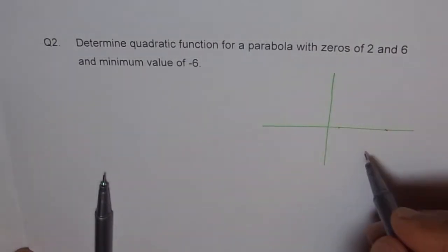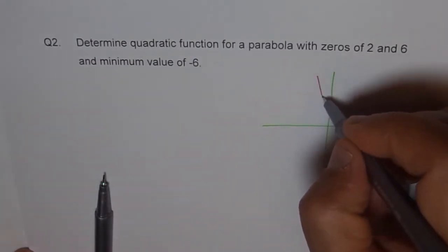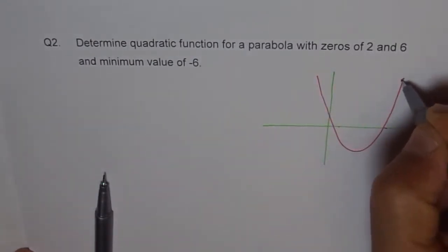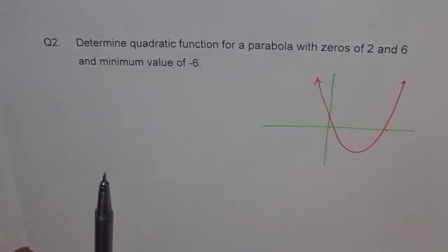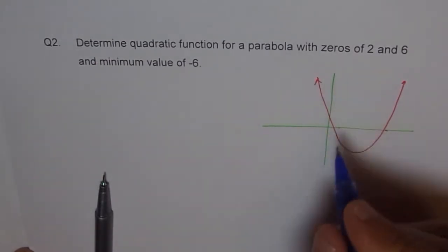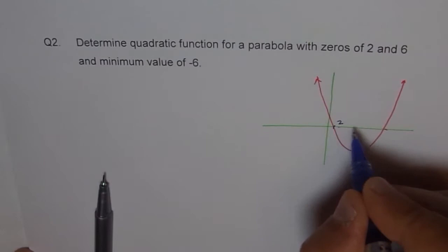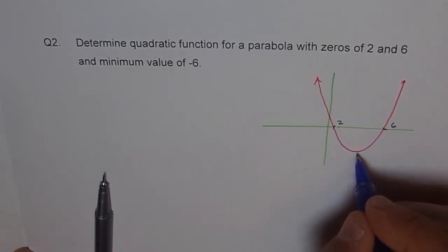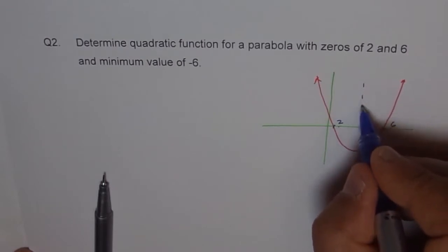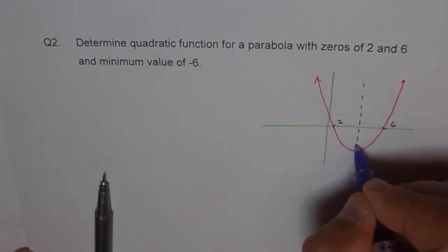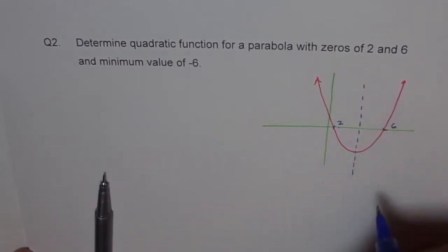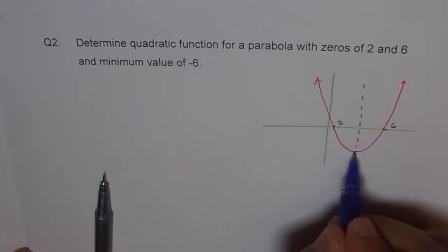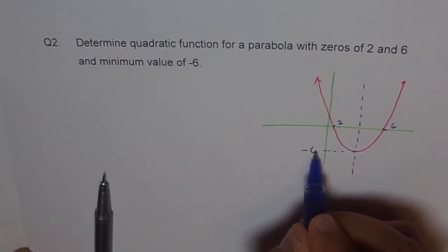And minimum value of minus 6 is somewhere here. So let me just sketch a parabola first, like this and say that the points here which are my x-intercepts are 2 and 6. And then we have this vertex and I don't know what my line of symmetry or axis of symmetry is but I know for sure this point is minus 6.